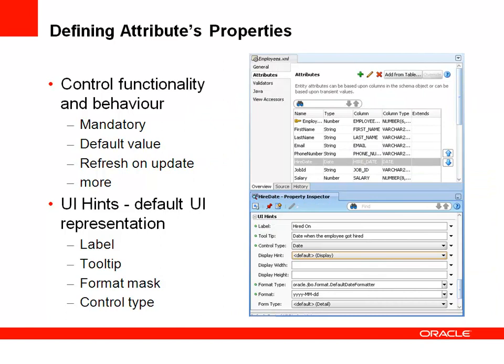Now that we've created our base data model, let's refine it. You can define attribute properties at the entity object level that will reflect in any view object using those entities. There are two types: functional/behavioral attributes — such as mandatory fields, default values, and database interaction properties — and UI hints, which control how attributes are displayed when creating a default user interface.